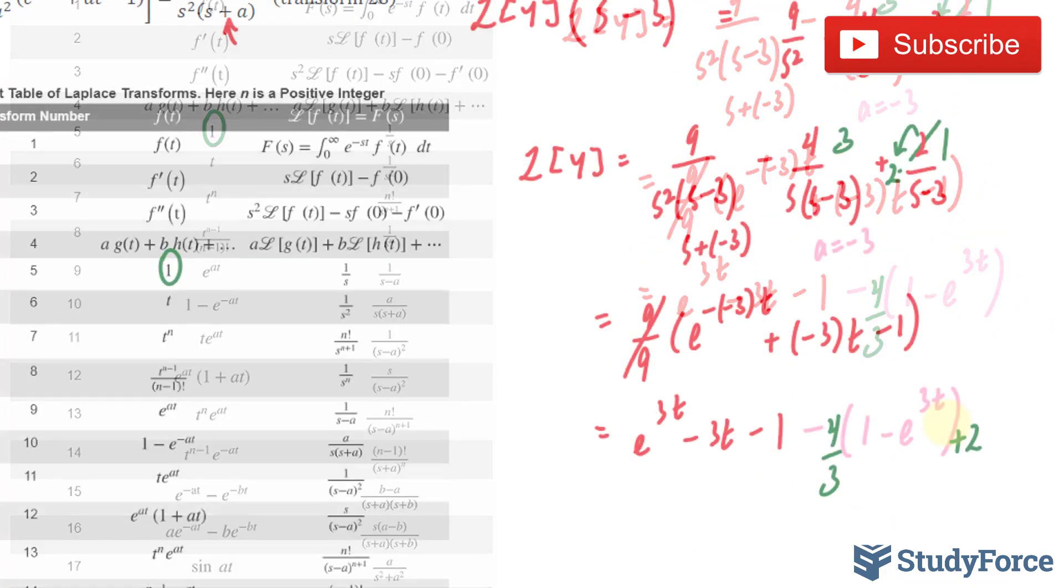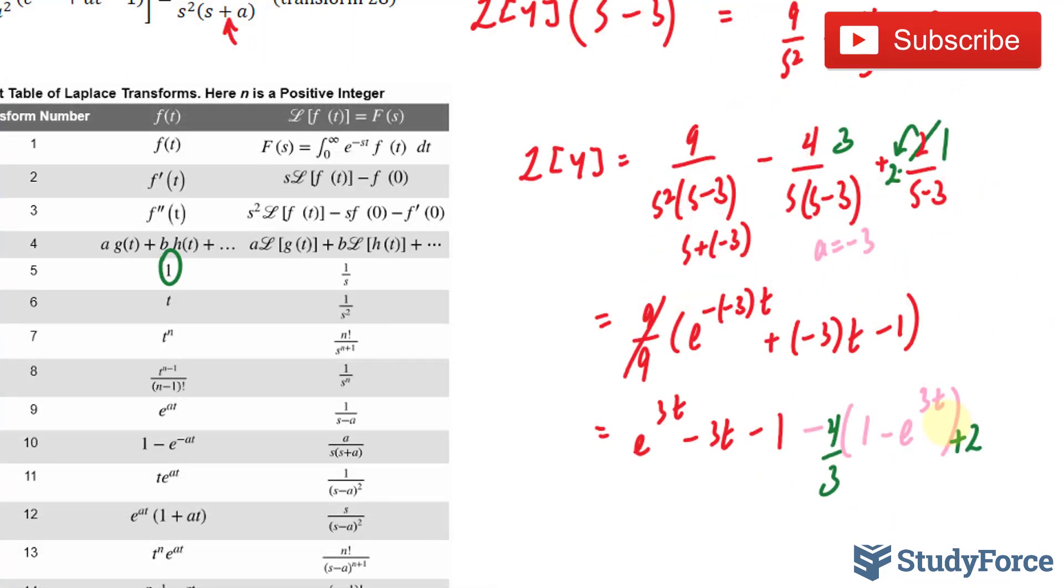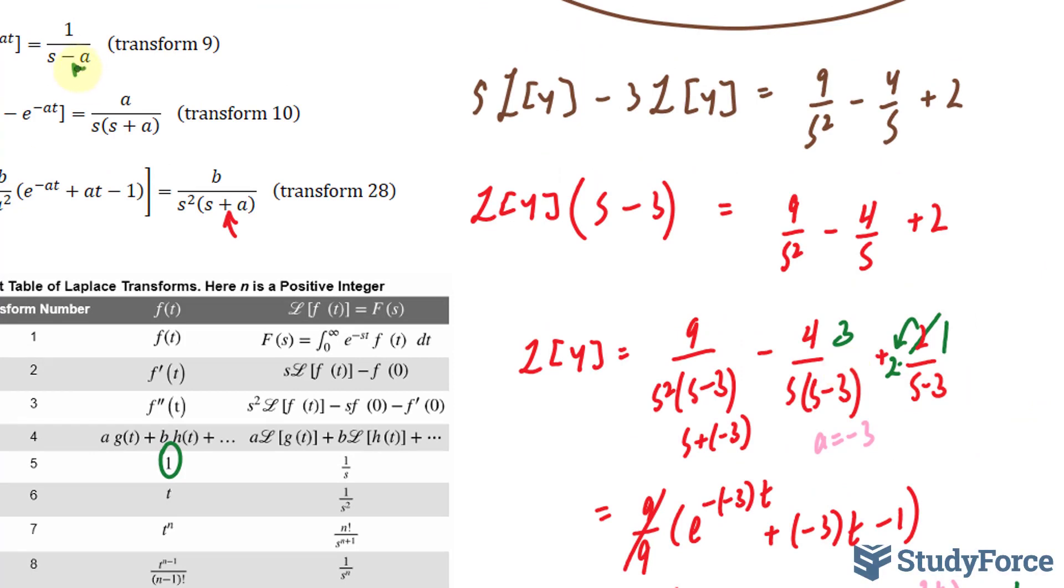Starting with the coefficient of 2, we have +2 times e^(3t). And I didn't put −3t, because this transform is already negative. So our a is 3, not −3.